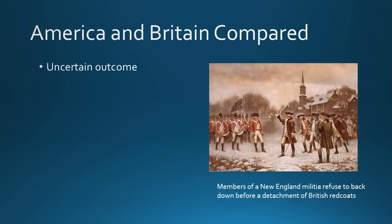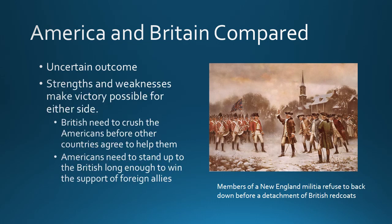Now let's compare America and Britain. We should note that the outcome of the war was uncertain — even though Britain was one of the major European powers, it had certain weaknesses that the Americans could exploit, making victory possible for either side. Britain needed to crush the Americans before other countries would agree to help the Americans out — essentially before France would join in the fight. The Americans, on the other hand, just needed to stand up to the British long enough to win the support of foreign allies. The British needed a decisive victory, whereas the Americans just needed to survive for a while.